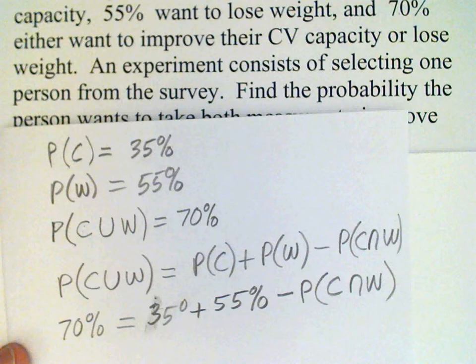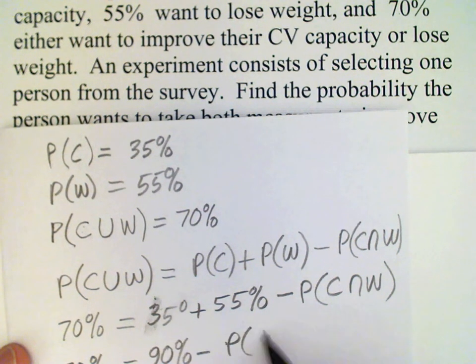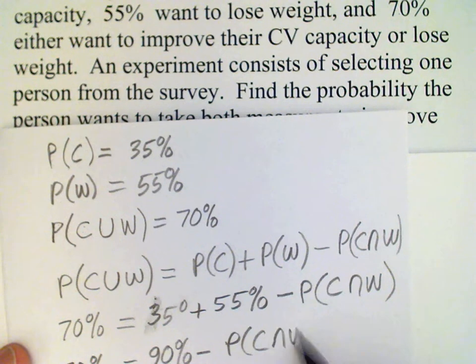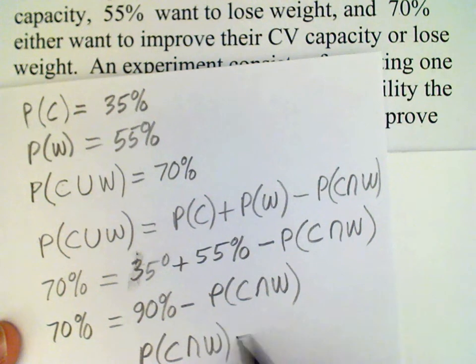Well, 35 plus 55 is 90%, so that's 90% minus the probability of C intersect W, and therefore probability of C intersect W must be 20%.